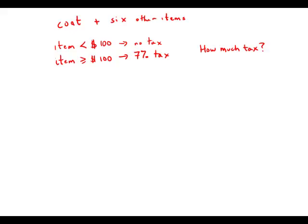Jerry bought seven clothing items, including a coat, and the sum of the prices of these items was $365. If there was no sales tax on any item with a price less than $100 and 7% sales tax on all the other items, what was the total sales tax on the seven items that Jerry bought?